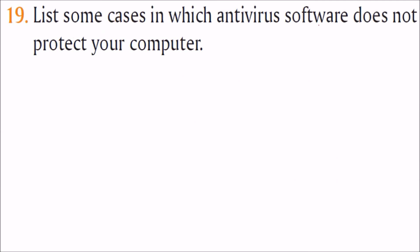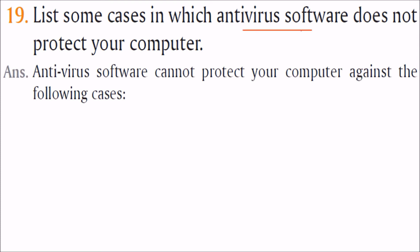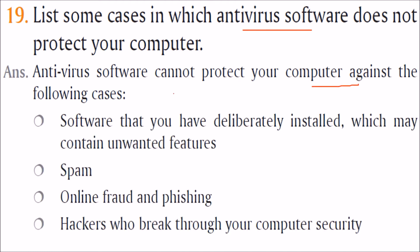List some cases in which antivirus software does not protect your computer. Antivirus software is for viruses, worms, trojan horses, etc. However, it cannot protect against: software that you have deliberately installed which may contain unwanted features; spam — antivirus cannot stop it; online fraud and phishing — very few antiviruses can stop this; and hackers who break through computer security — antivirus has nothing to do with that.